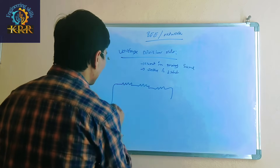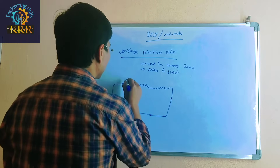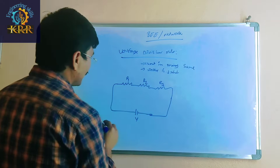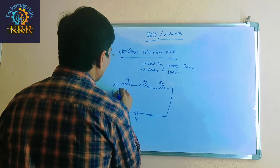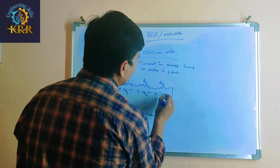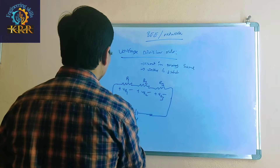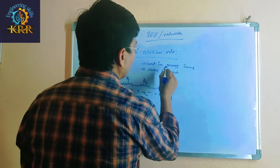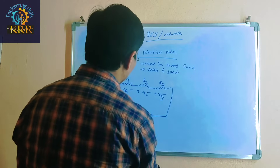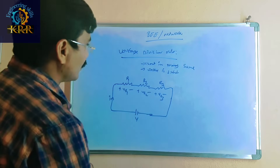Here we have three resistors. This is R1, this is R2, and this is R3. The voltage across R1 is called VR1, the voltage across R3 is called VR3. The current is the same throughout, but the voltage across each resistor is different. The total voltage is equal to the sum of the three individual voltages.